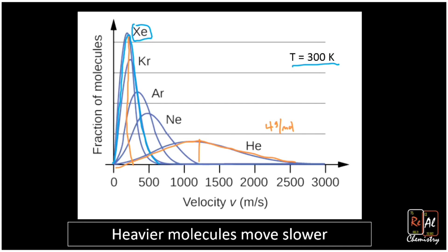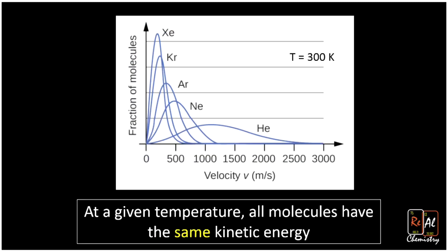Here we're thinking about two variables, mass and velocity, that are related to kinetic energy. Our last point is that at a given temperature, all molecules have the same kinetic energy. That's counterintuitive because you look at this chart and they're all moving at different speeds. You might think helium has the most kinetic energy, but actually all of those have the same kinetic energy.